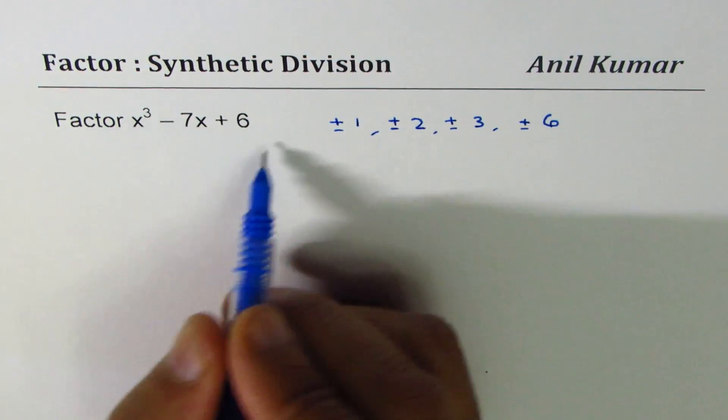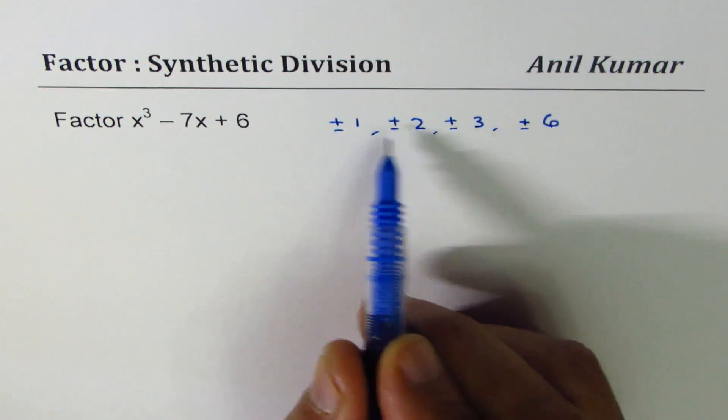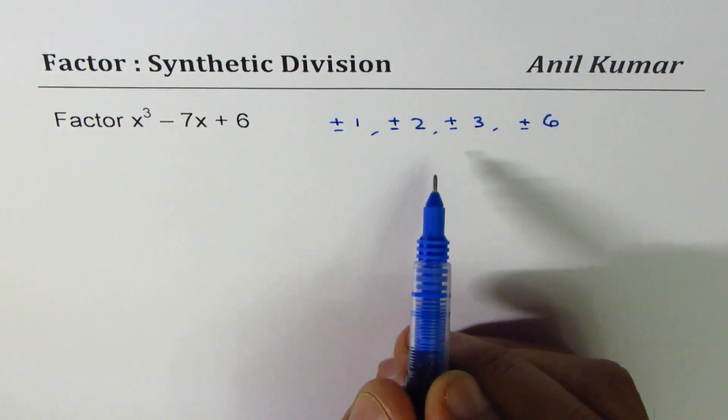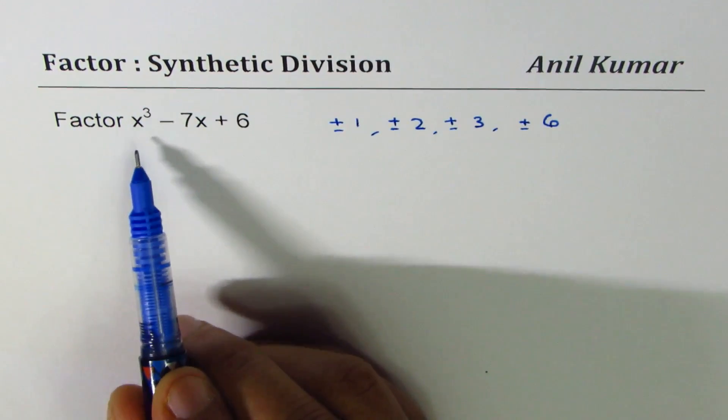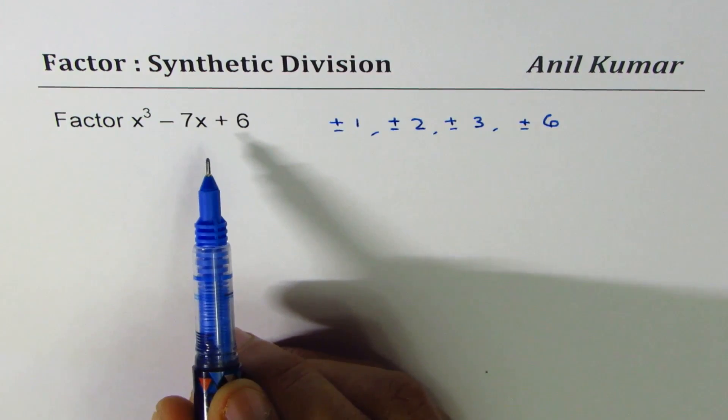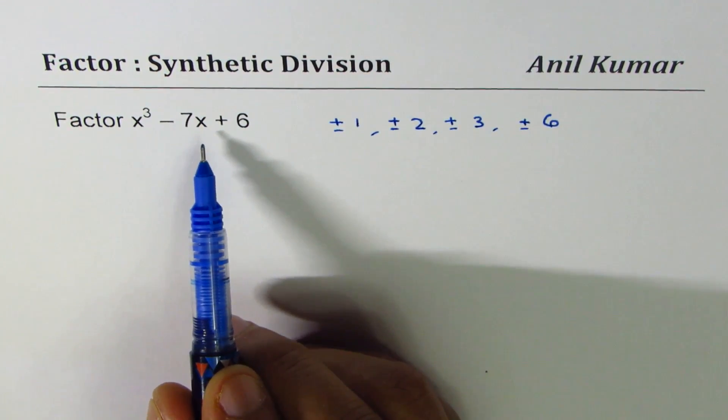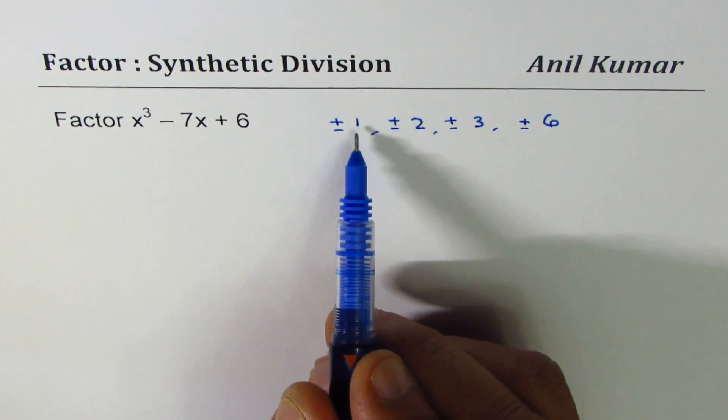You'll find the value of this polynomial one by one with these possible numbers, and they will give you the first factor. Since we are working with a cubic equation, we need to find a factor first, divide, and then get a quadratic equation which can be easily factored. So let's try 1.